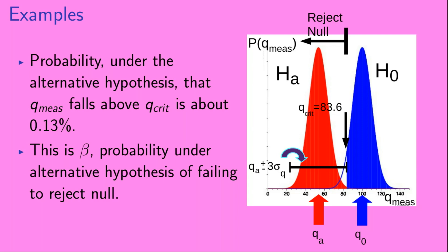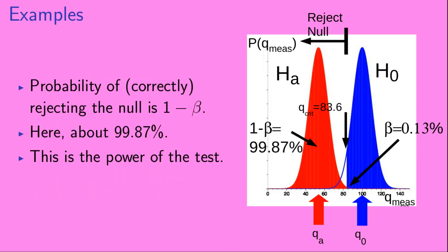Half of those 0.27% will fall above the 3 sigma q range and half below — about 0.13% above and 0.13% below. So the probability under h-a that q-measured falls above q-critical is about 0.13%. This is beta, the probability under the alternative hypothesis of failing to reject h-naught. Therefore the power of the test — 1 minus beta — is about 99.87%, which is 1 minus 0.13%. That is our result for example 2.